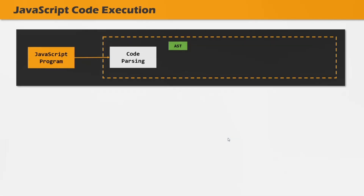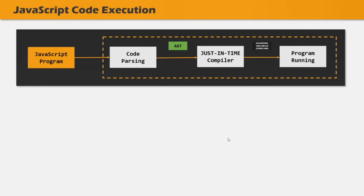The next step is compilation. The just-in-time compiler takes the AST and based on that generates machine code. This machine code gets executed right away by the JavaScript engine. As we learned, the just-in-time compiler generates machine code that gets executed immediately — we do not save this machine code in a portable file. As soon as the just-in-time compiler generates the machine code, it is executed immediately by the JavaScript engine. So now our program is running in the browser.